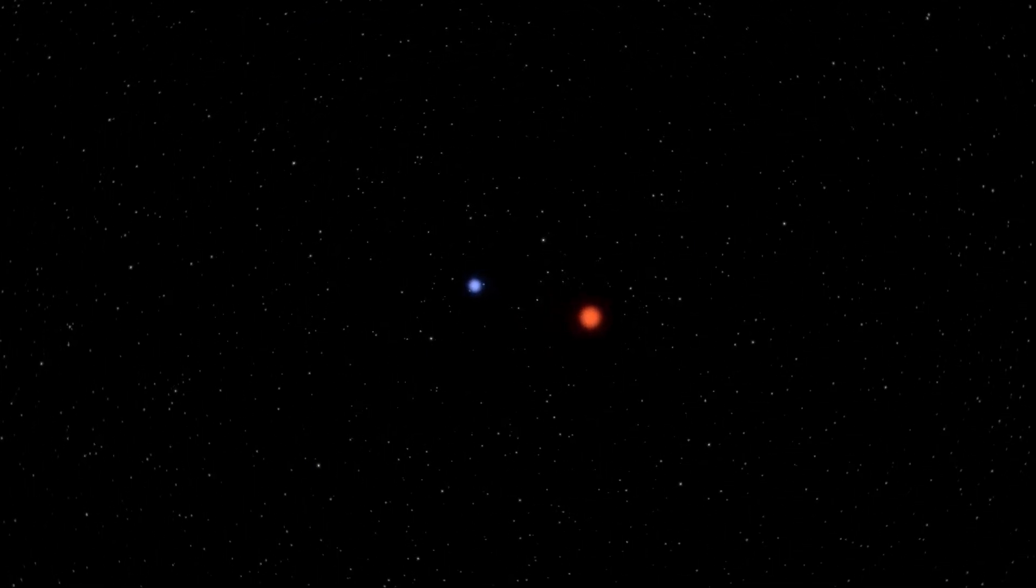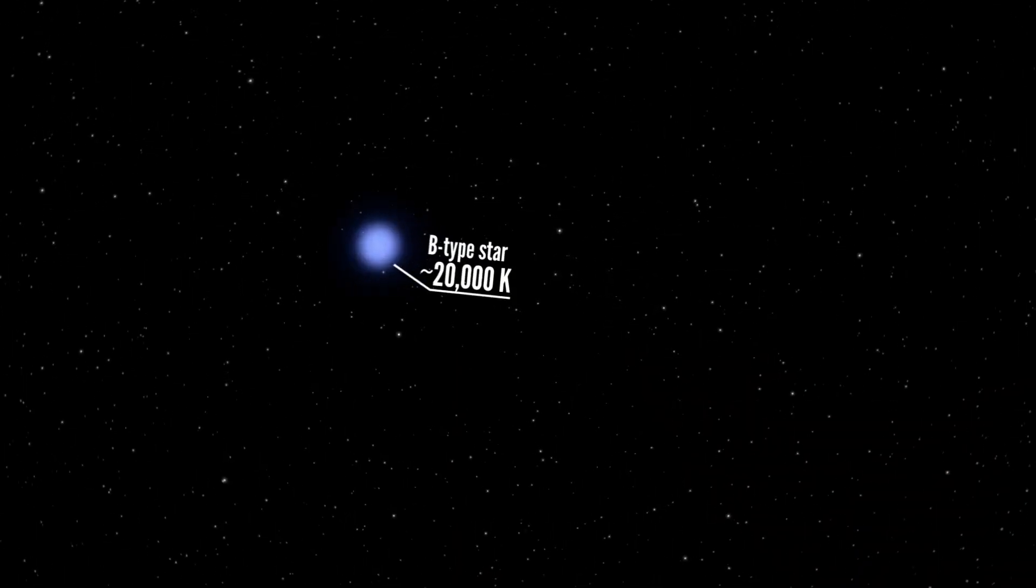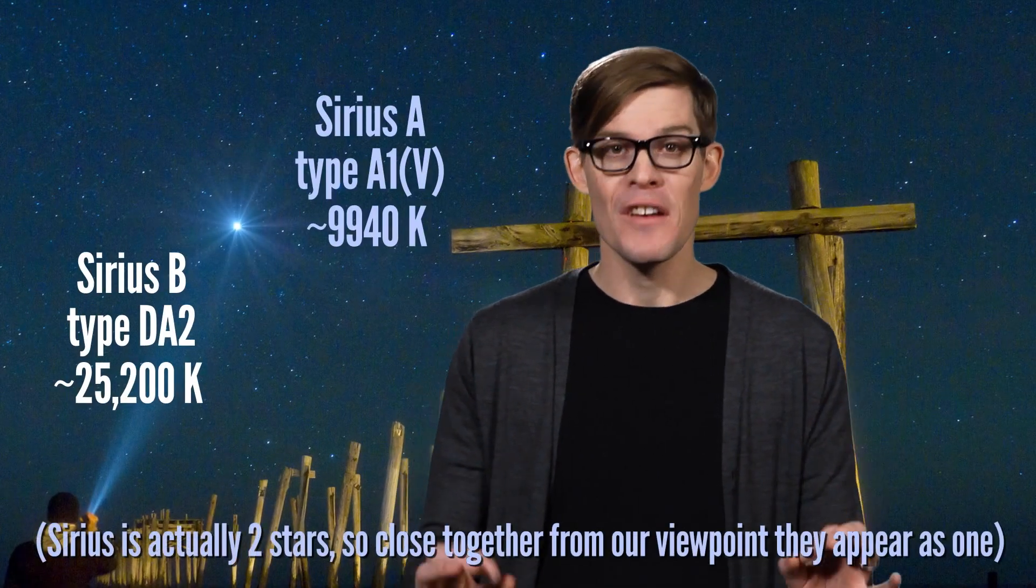Across the universe, stars of all different temperatures give off different mixtures of light. Cooler stars appear red, while the hottest stars are blue. If you know just where to look, you can see colored stars for yourself in the blue of Sirius, the brightest star in the night sky.